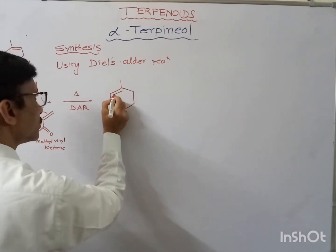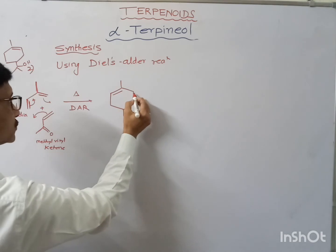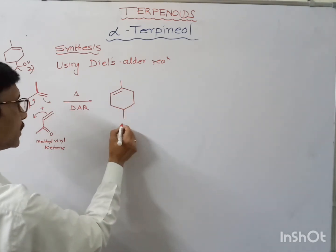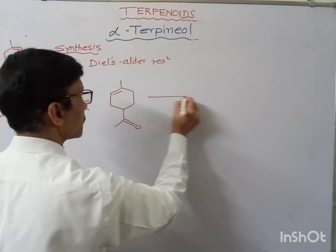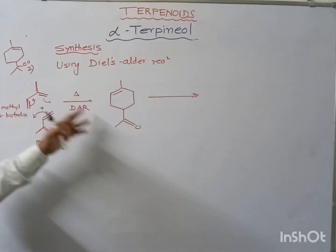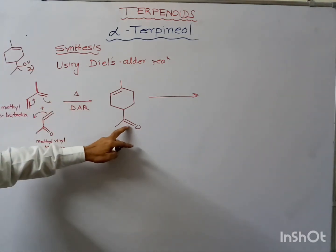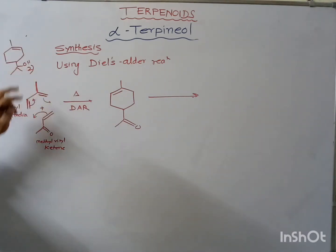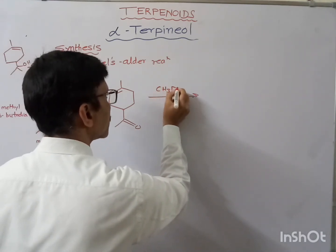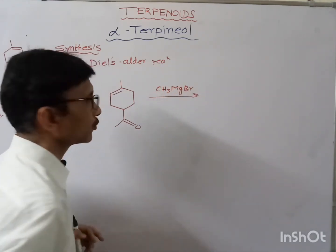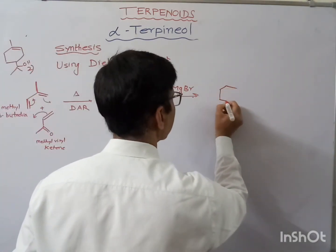One new double bond is formed, along with two new single bonds. We have now obtained this cyclic part, and we have to convert the carbonyl into a tertiary OH. That can be done using methyl magnesium bromide to give the tertiary alcohol product.